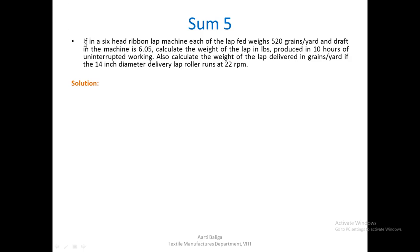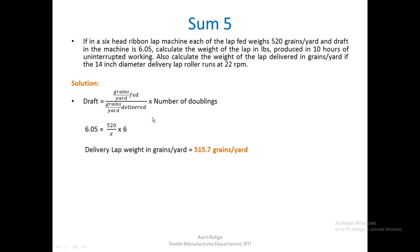For the ribbon lap machine problem: in a 6-head machine, each lap fed weighs 520 grains per yard and the draft is 6.05. Calculate the weight of the lap produced in 10 hours of uninterrupted working (100% efficiency) and the weight of the delivered lap in grains per yard, given a 14-inch diameter delivery lap roller running at 22 rpm. Using the draft formula, we calculate the delivered lap weight as 515.7 grains per yard.